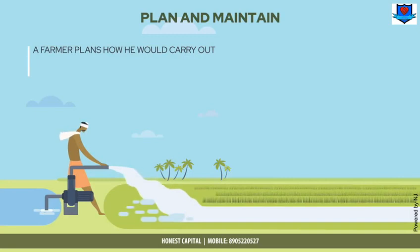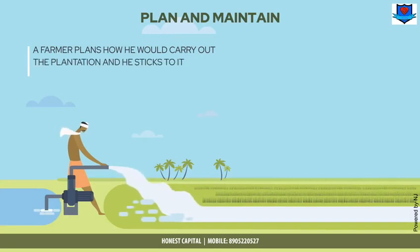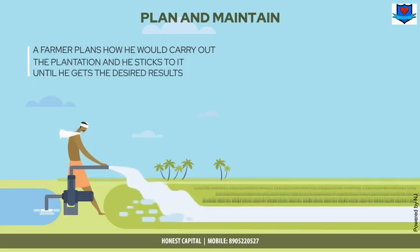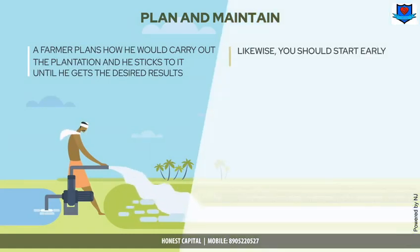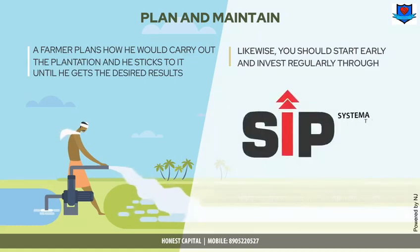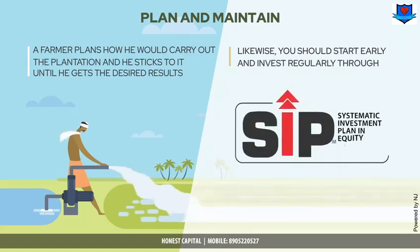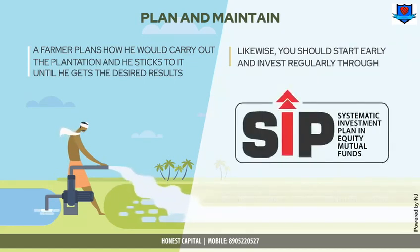Plan and maintain. A farmer plans how he would carry out the plantation and sticks to it until he gets the desired results. Likewise, you should start early and invest regularly through SIP — Systematic Investment Plan — in equity mutual funds until your financial needs are fulfilled.